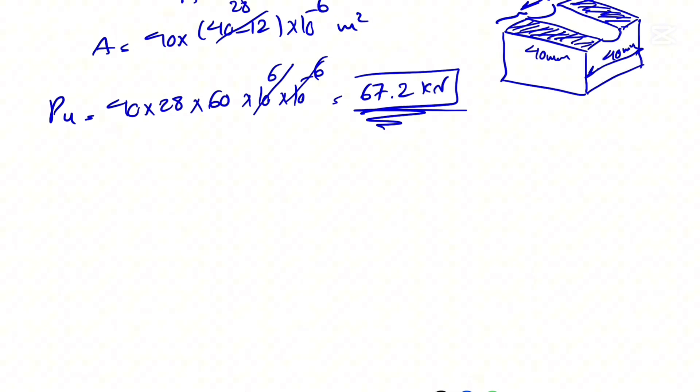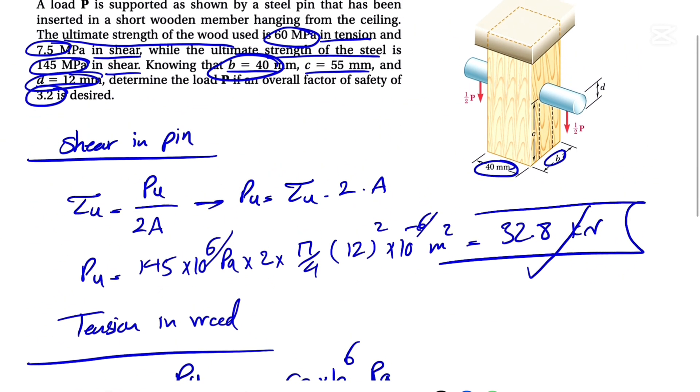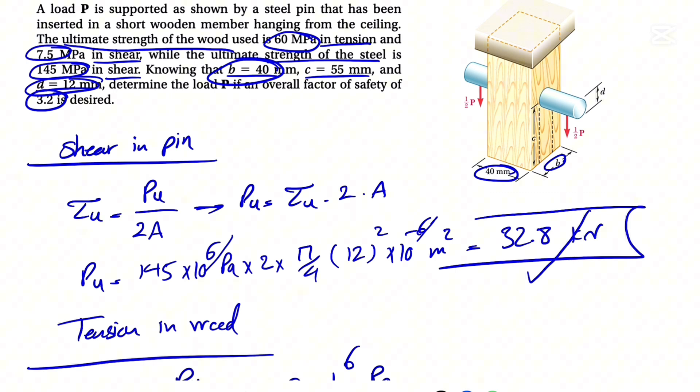And the last ultimate stress that we have is the shear in the wood. Let's see which surface we are dealing with for that one. The surface that the wood is going to experience the shear is one in here, so we have one rectangle. One side is 40, and the other side is c, which is 55. But we also have the same thing on the other side, so we have two of these rectangles.